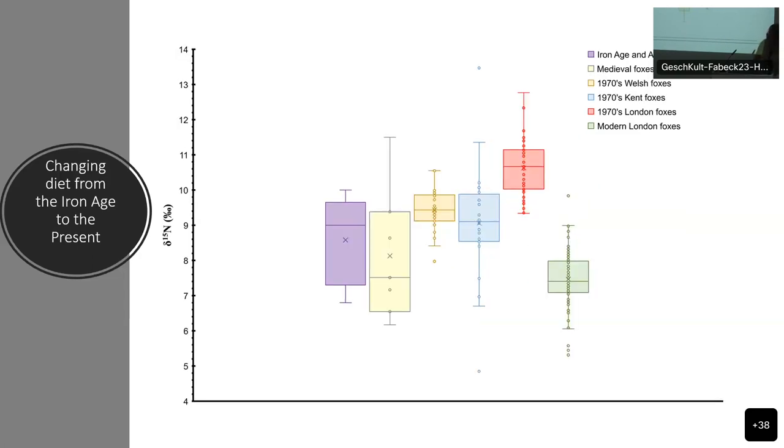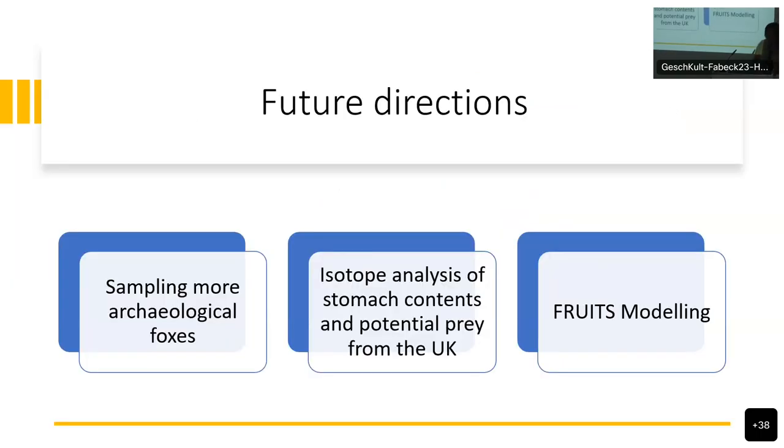If we look at the nitrogen collagen, which is what you were seeing earlier, the nitrogen for the modern ones is completely different from the rest of the foxes. We are still investigating. At the moment, we want to sample more archaeological foxes because we really want to see those differences, how diet has changed from the archaeological period to present.